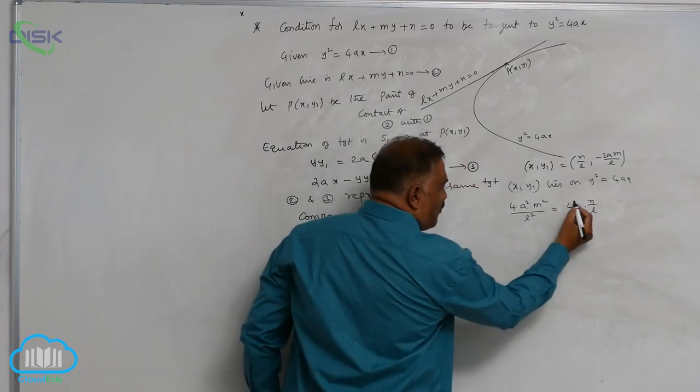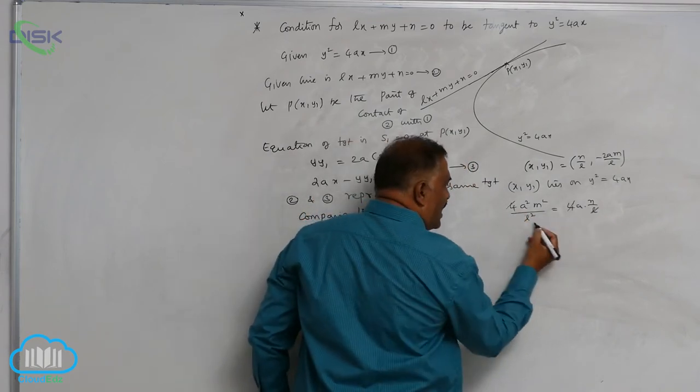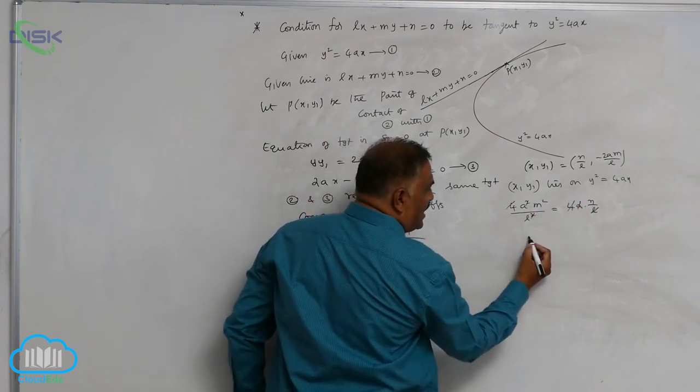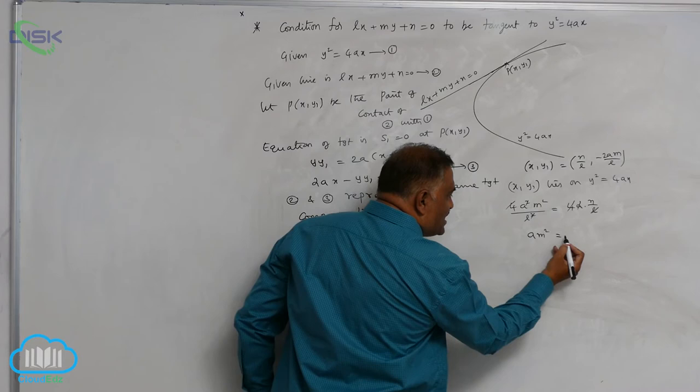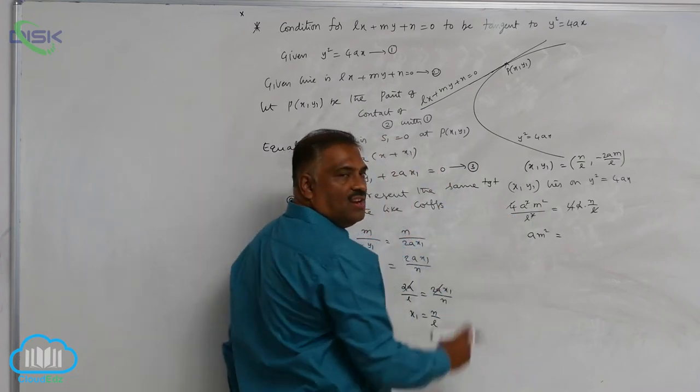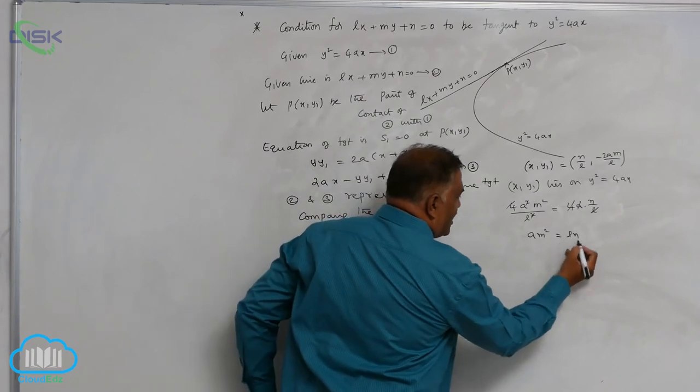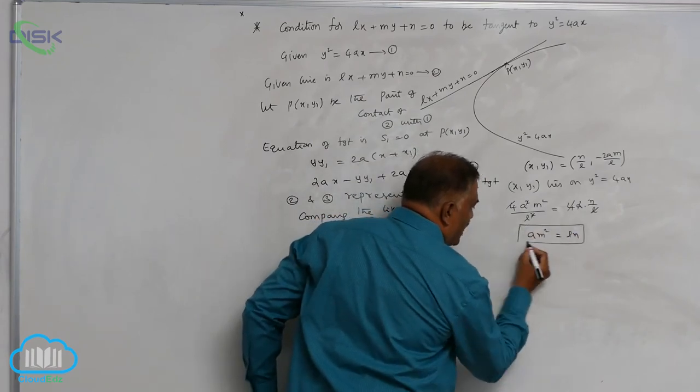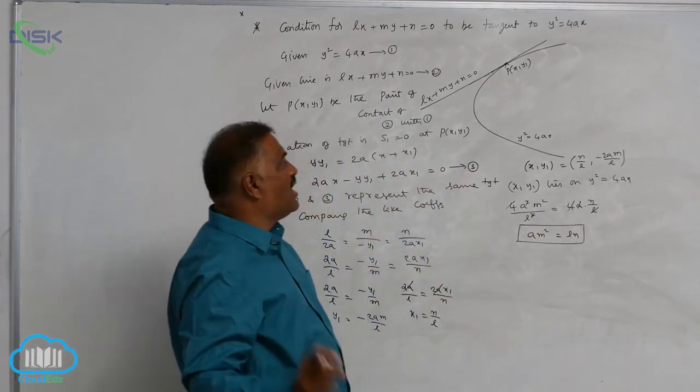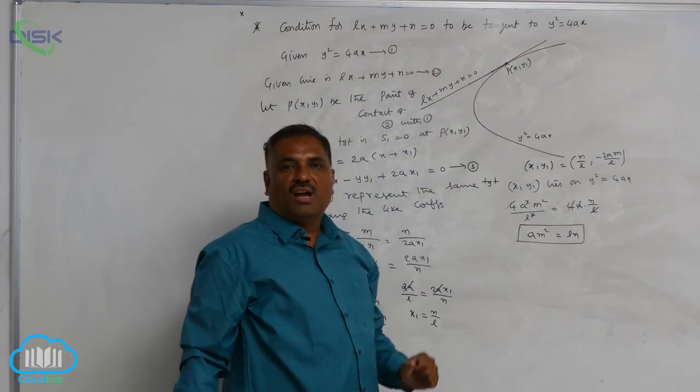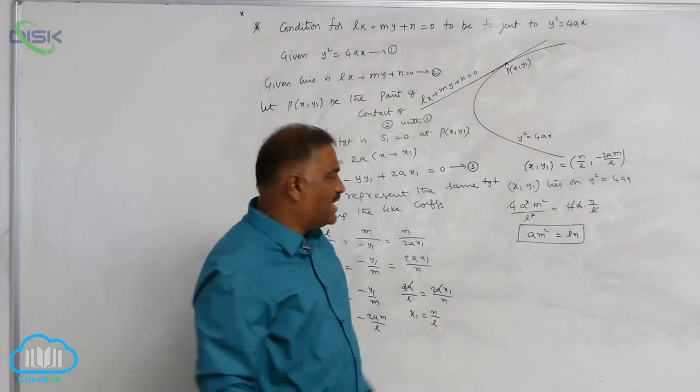4 gets cancelled, one L gets cancelled, even one A gets cancelled. You can see very clearly, AM square is equal to—one L is left over in the denominator, N is here—it is LN. Then, AM square equal to LN is the condition for Lx plus My plus N equal to 0 to be a tangent to the parabola y square equal to 4Ax.